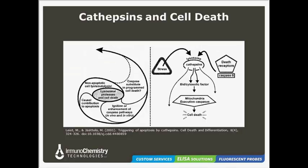Looking at one proposed mechanism: cellular stress or triggering TNF receptors could initiate cathepsin release from the lysosomes. After translocation, they could go on to cleave cytosolic substrates like BID, which would trigger the release of mitochondrial factors and ultimately result in apoptotic cell death.